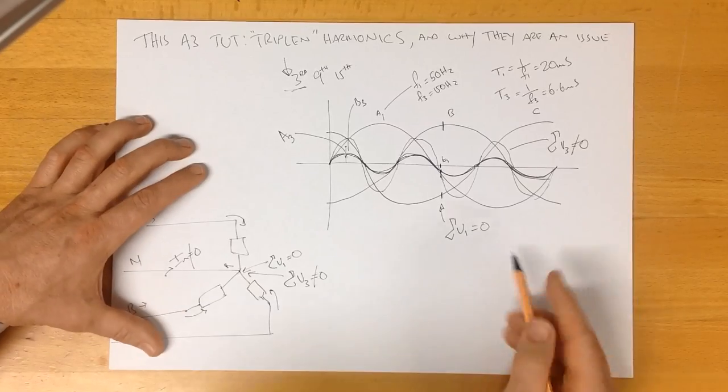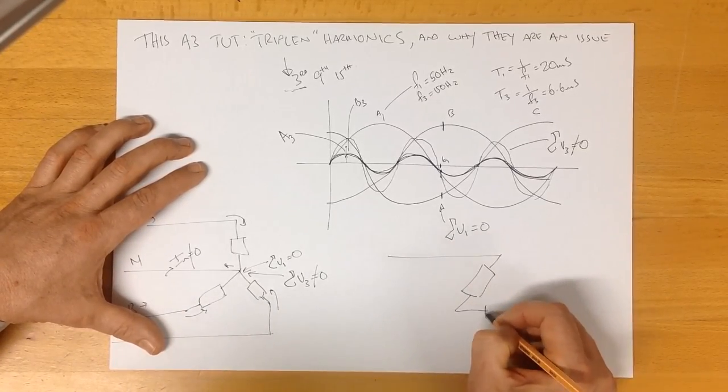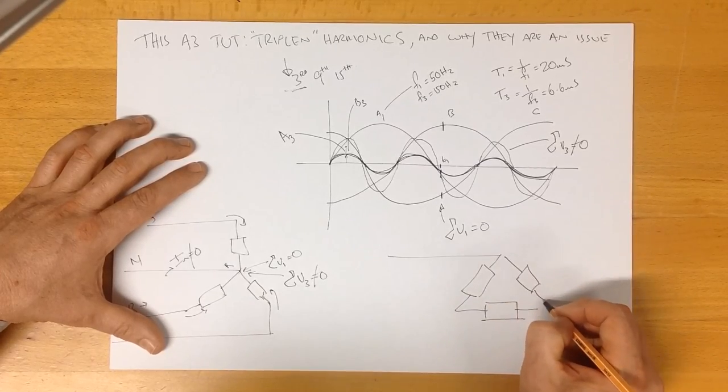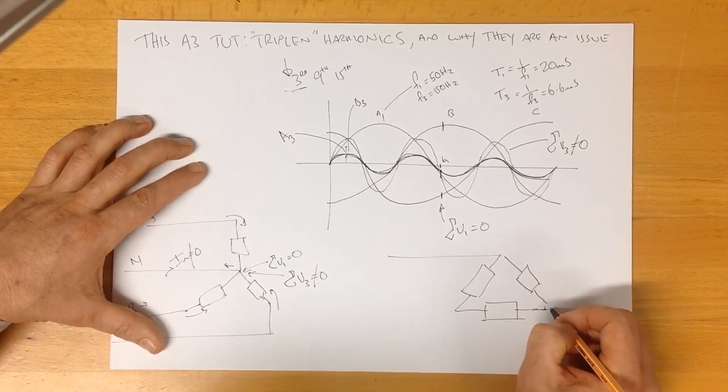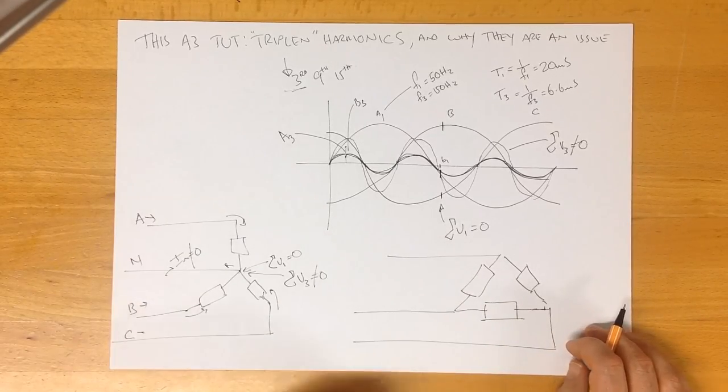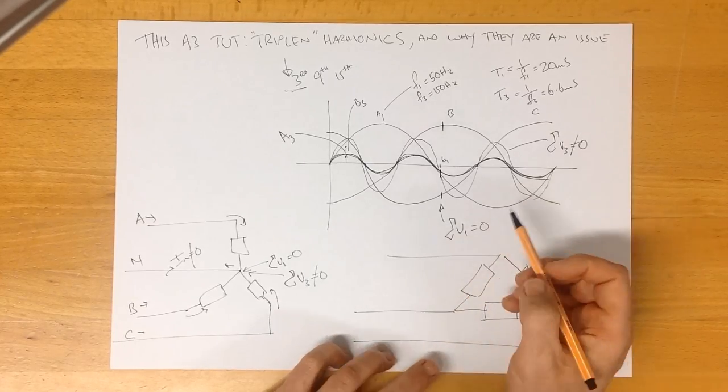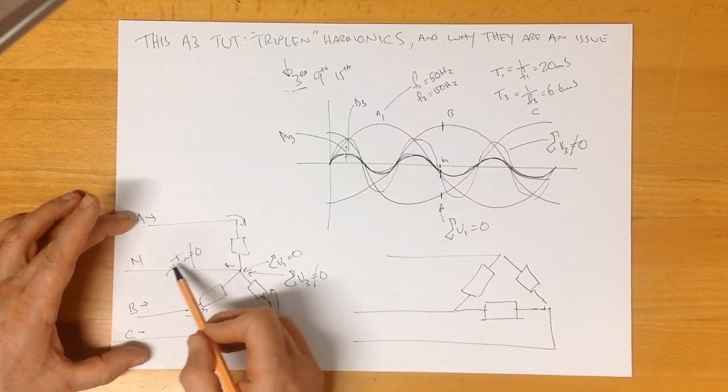In a delta system, which we can draw like this, we have no return path to get rid of these triplens. They can't go down the neutral wire this way.